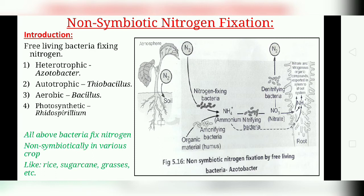These bacteria grow in habitats that include marine and freshwater sediments, soil, leaves, and the intestinal tracts of various animals. Some of these species are aerobic — for example, Azotobacter. Most, however, are anaerobic, or can fix nitrogen only under very low oxygen partial pressures.